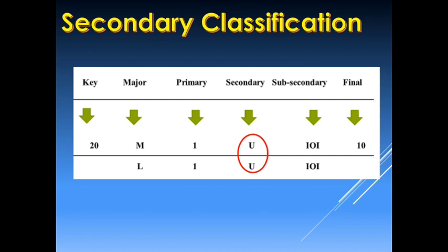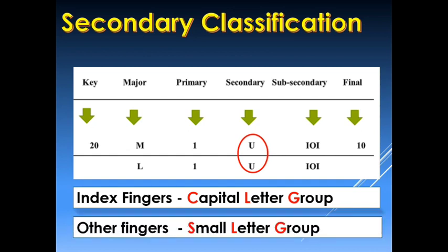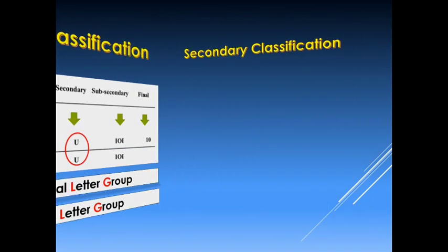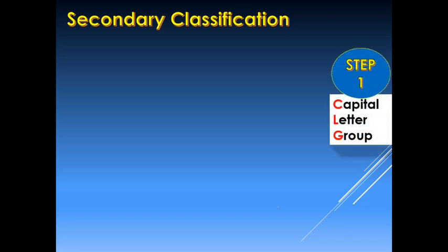Secondary classification involves the individual type of the fingerprint pattern coming from the two index fingers for the capital letter group, and the other fingerprints for the small letter group. The right index finger — blocks 1 to 5 — will be our numerator, and the left index and the other fingers taken from the left hand will be the denominator. Our first step in secondary classification is the capital letter group, which involves the index fingers: the right index as the numerator and the left index as the denominator.